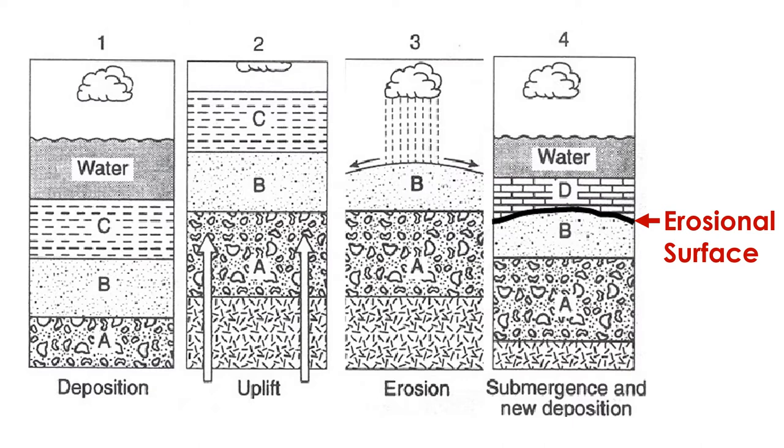During time 3, these agents cause weathering and erosion of rock. Stratum C is completely destroyed, and so is part of stratum B. Stratum B becomes truncated.